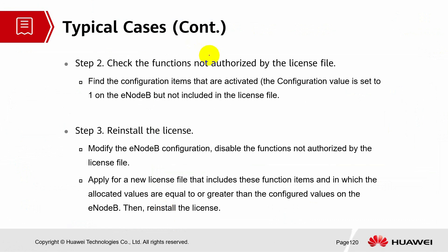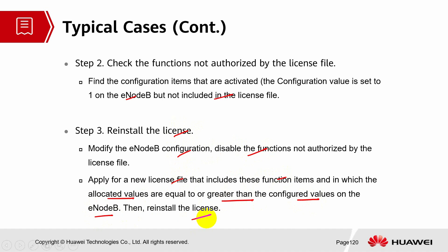The second step is to check the functions not authorized by the license files. Find the configuration items which are activated — make sure the values are set to 1 on the EOB but are not included in the license file. In that case, you need to reinstall the license, modify the EOB configuration, disable the function not authorized by the license file, or apply for a new license that includes these function items where the allocated values are equal to or greater than the configured values on the EOB. Then reinstall the license.